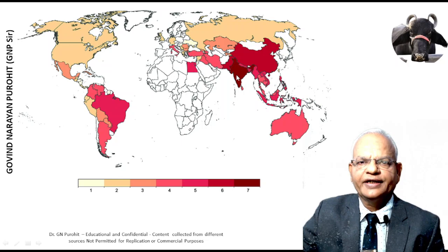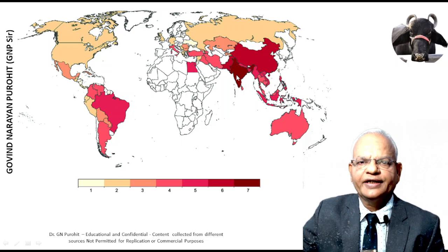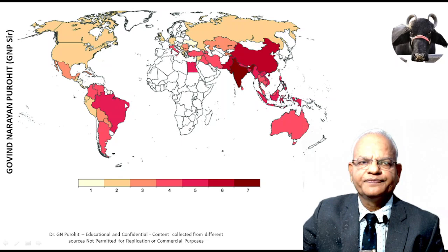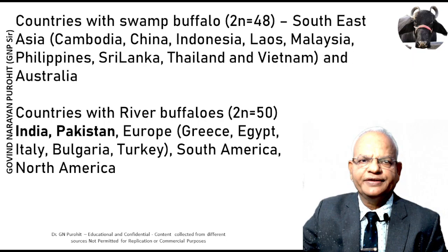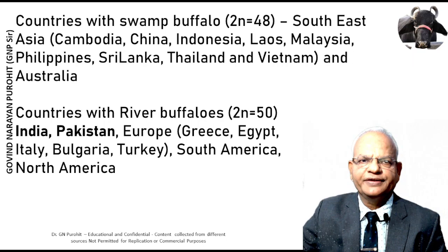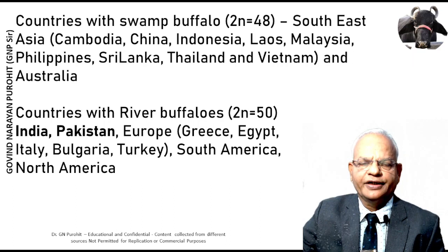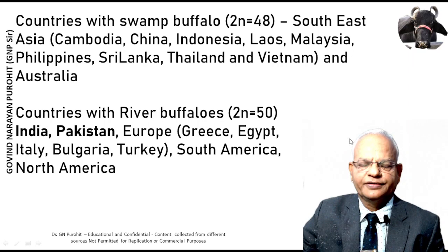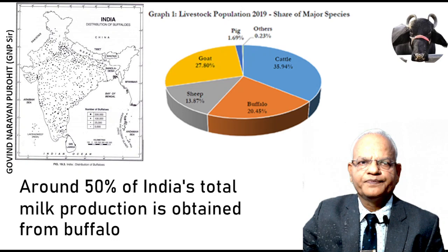This map shows the presence of buffaloes all over the world. The highest population is in India and Pakistan. River buffaloes are also found in African and Gulf countries, South America, North America, and Australia. Countries with swamp buffalo include Southeast Asian nations — Cambodia, China, Indonesia, Laos, Malaysia, Philippines, Sri Lanka, Thailand, Vietnam — and Australia. Countries with river buffalo include India, Pakistan, European countries like Greece, Italy, Bulgaria, Turkey, parts of Africa including Egypt, and South America and North America.